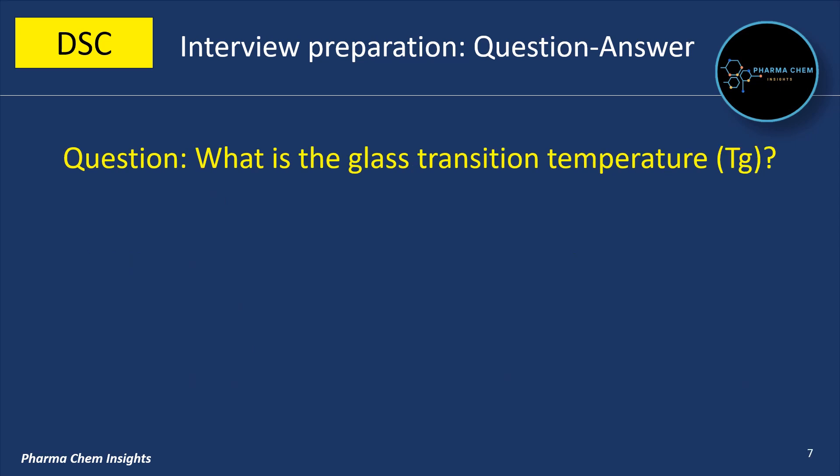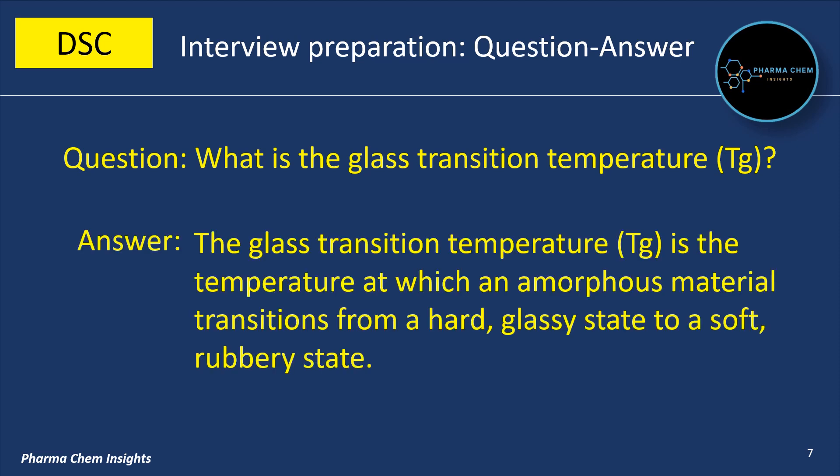Next question: What is the glass transition temperature (Tg)? The glass transition temperature is the temperature at which an amorphous material transitions from a hard, glassy state to a soft, rubbery state.